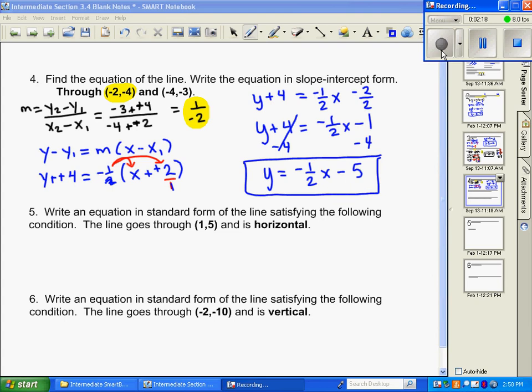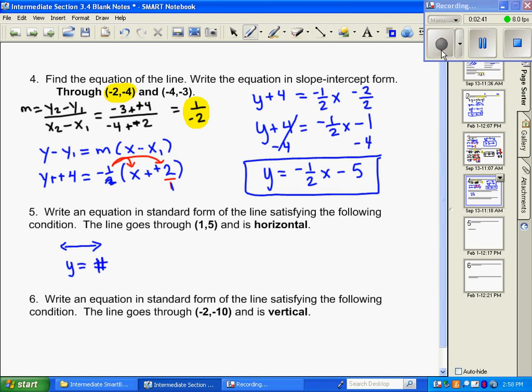Now, number 5 is going to ask us to write an equation in standard form, and it gives us a guideline. So it goes through the point (1, 5), and it's horizontal. Well, horizontal, that is a line that visually looks like this, and we know that all horizontal lines are defined by y equals some number. So we know it's y equals some number. The only thing we know about it is this one point it's through, so what does the y value equal? 5. So our equation is y equals 5.